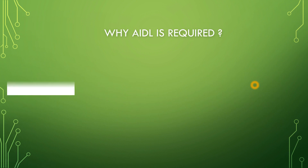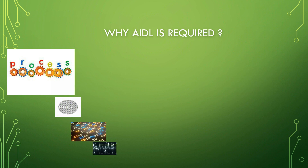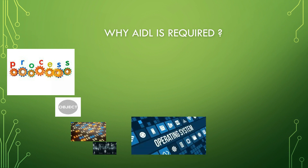Since we cannot directly access the memory of another process, the object that has to be communicated or shared must be decomposed into its primitive types, which can be understood by the operating system. Whatever object has to be shared with another process is decomposed into primitive types so that the Android operating system can understand it. This process is called marshaling.